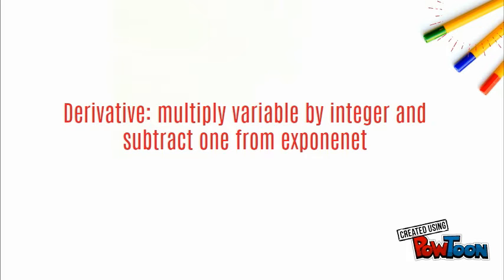To find the derivative, you multiply the variable by the preceding integer and subtract 1 from the exponent.